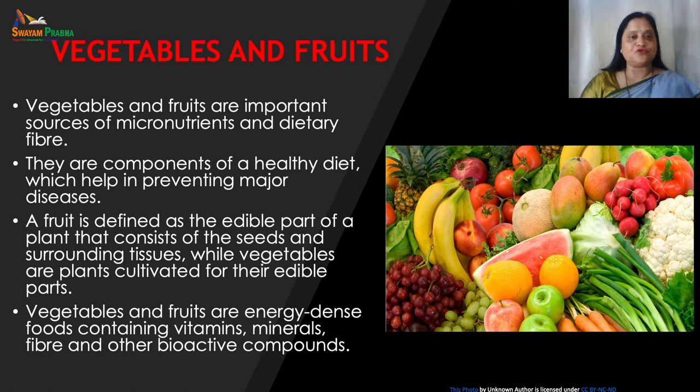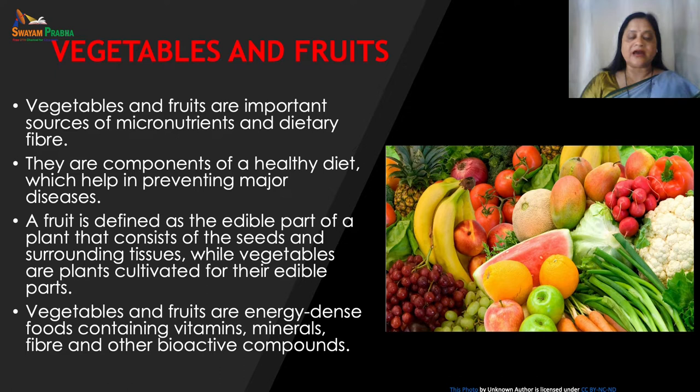Vegetables and fruits are important sources of micronutrients and dietary fiber. They are components of a healthy diet which help in preventing major diseases. A fruit is defined as the edible part of a plant that consists of the seeds and surrounding tissues, while vegetables are plants cultivated for their edible parts. Vegetables and fruits are energy-dense foods containing vitamins, minerals, fiber and other bioactive compounds.